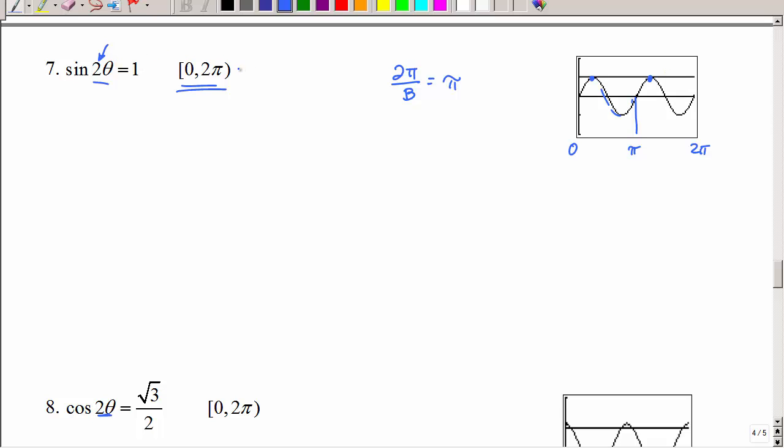First of all, this is an interval for theta. So I need the interval for 2 theta, so you just want to multiply those by 2. Just stay with me. Right here, I'm going to take the inverse sine of both sides. I have to do this first. When is the sine equal to 1? It's equal to 1. Look at our graph.